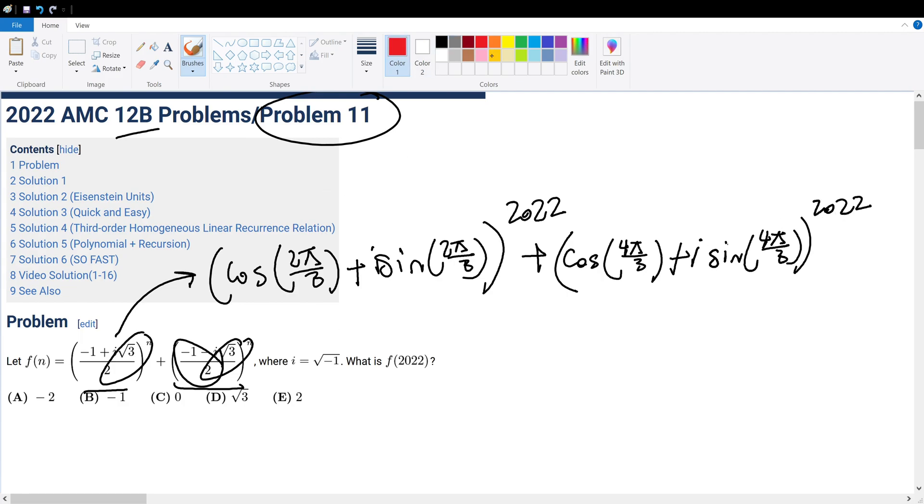Now, based on Morph's theorem, we could move the 2022 in here, and when we move it in here, it will look like, for example, 2π over 3 times 2022 plus i, and you get the idea.